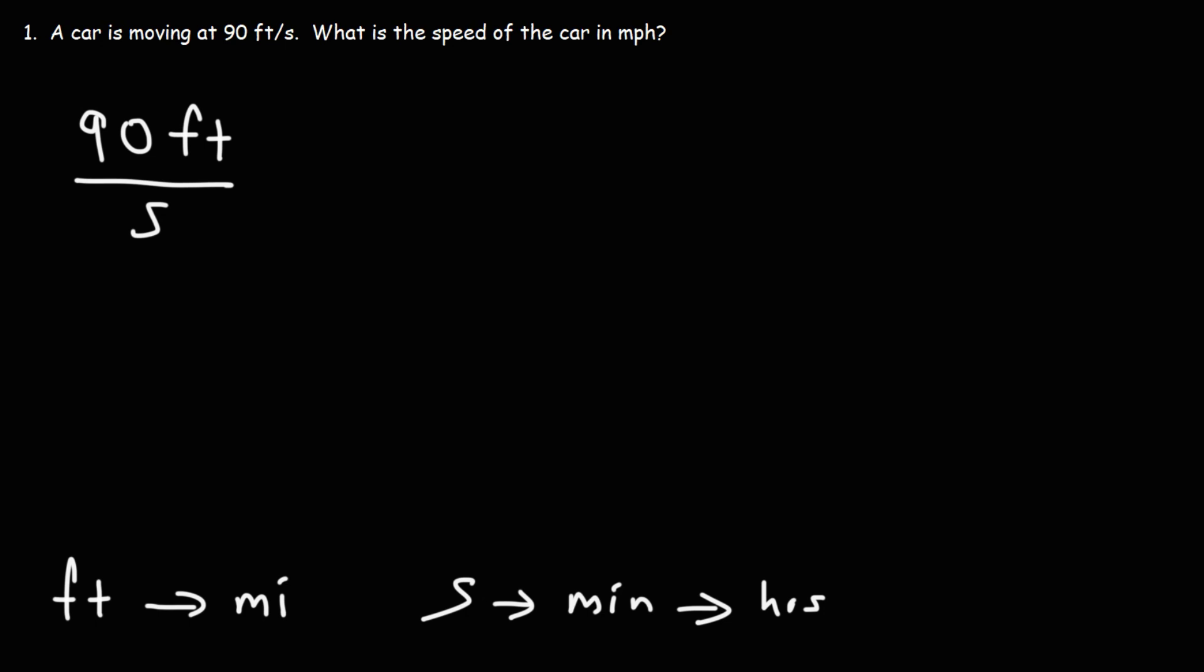Now what is the conversion between feet and miles? You need to know that one mile is equivalent to 5,280 feet. That's going to be our first conversion factor. You also need to know that there's 60 seconds in a minute and there's 60 minutes in one hour. So those are the three conversion factors that we're going to use to do this problem.